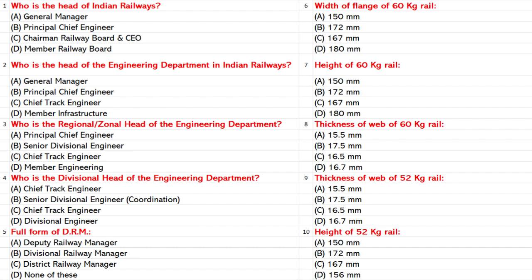Who is the Regional Zonal Head of the Engineering Department? A. Principal Chief Engineer. B. Senior Divisional Engineer. C. Chief Track Engineer. D. Member Engineering. Answer: A. Principal Chief Engineer.